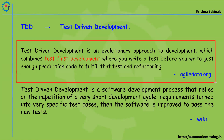Then you write production code to fulfill that test, and refactoring means — first you write the code, you test that code, if it fails you try to refactor it to make your test pass. Your goal is to pass the test, so you write test cases first, test your code, and if it is not working properly you refactor and test again until it passes.